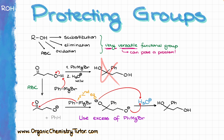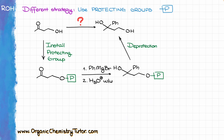You might argue that's not that big of a deal — we'll just use two equivalents of our Grignard reagent and get what we want at the end. And you would be correct in this particular case. But that's only possible because the Grignard reagent we are using is dirt cheap and easy to make. This approach would be a horrible waste of time and material if instead we used a complex reagent that took days or weeks to make. This is where protecting groups come into play — instead of using two equivalents, we can use a temporary protecting group on our alcohol so it won't be able to mess up our reaction.